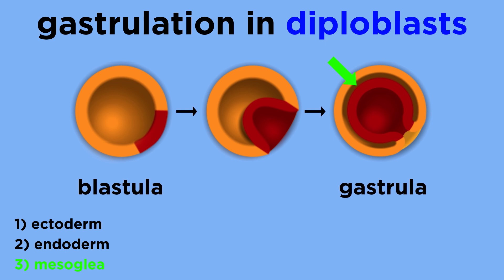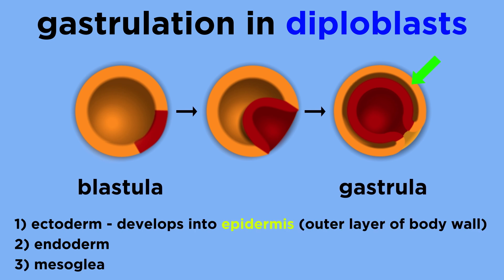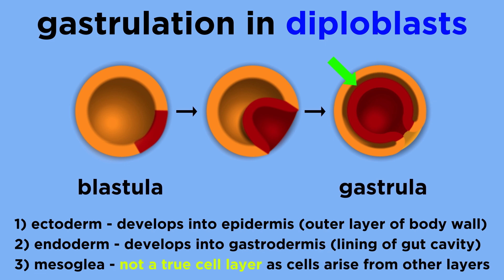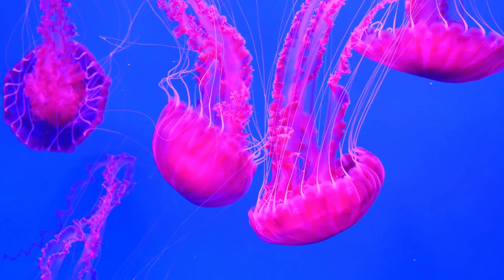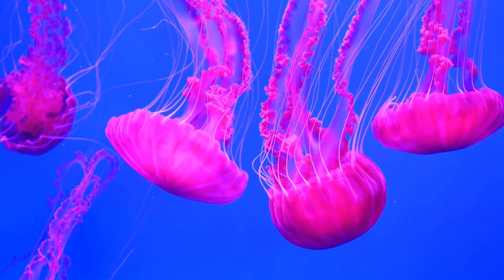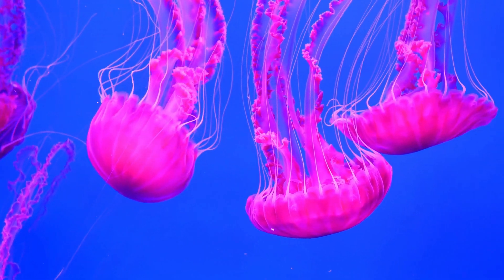The ectoderm develops into the epidermis, the outer layer of the body wall. The endoderm, meanwhile, gives rise to the gastrodermis, the tissues that line the gut cavity. The mesoglea is not considered to be a true cell layer, because any cells found within it arise from the endoderm or the ectoderm. The cells within each tissue layer are functionally interdependent. The gastrodermis consists of digestive and muscular cells, and the epidermis contains epithelial and muscular cells.